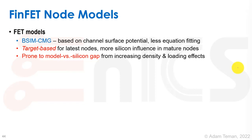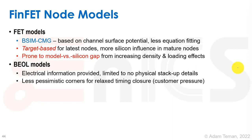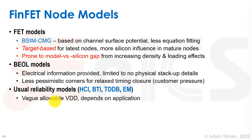For back-end-of-the-line, the modeling is far from accurate — we get electrical information but not much statistical variation data from the fab. Fabs also give less pessimistic corners because customers pressure them since meeting timing with very pessimistic corners is really hard. So BEOL models can also really hurt us. We do get the usual reliability models: HCI, BTI, TDDB, and EM.